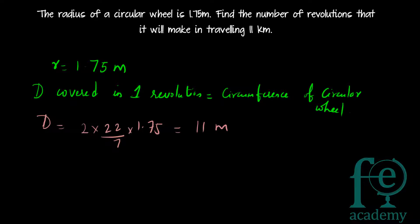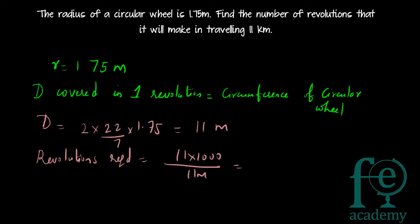For covering 11 kilometers, how many revolutions are required? Revolutions required equals 11 kilometers divided by 11 meters, which is the distance traveled in one revolution. You get 1000 revolutions required by this circular wheel to complete 11 kilometers.